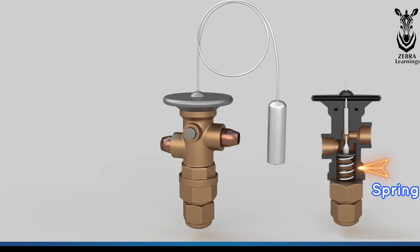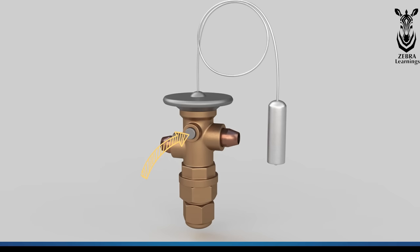Refrigerant flow control is done through this spring. This normally keeps the refrigerant passage closed. This is an adjusting valve, through which we can adjust the spring manually.